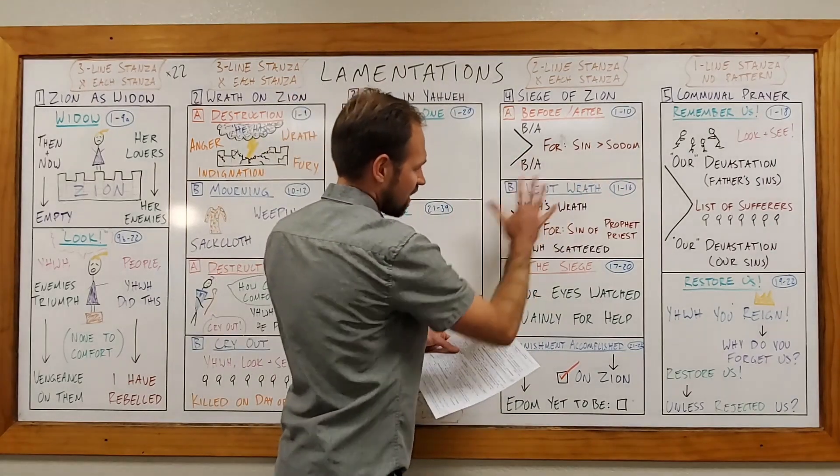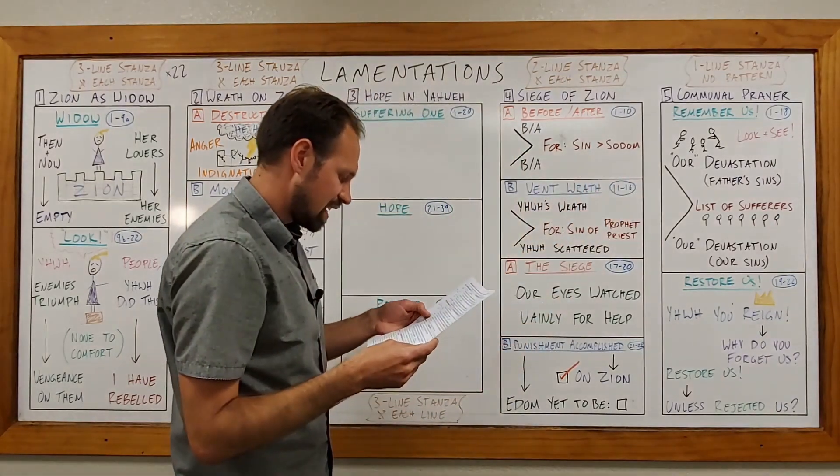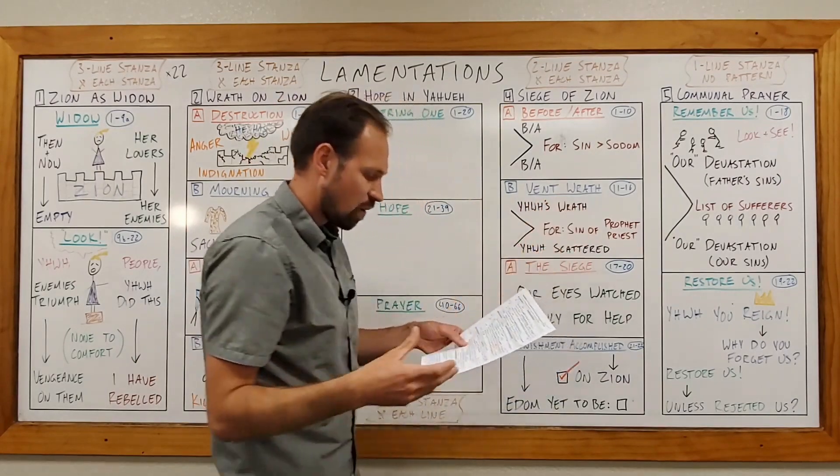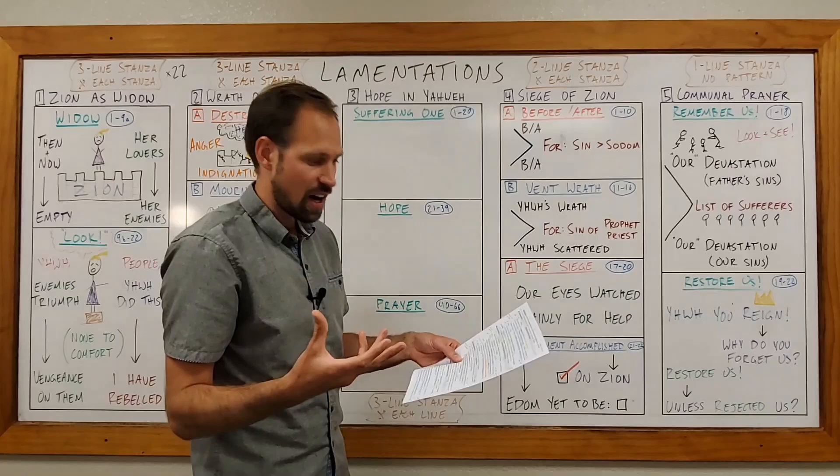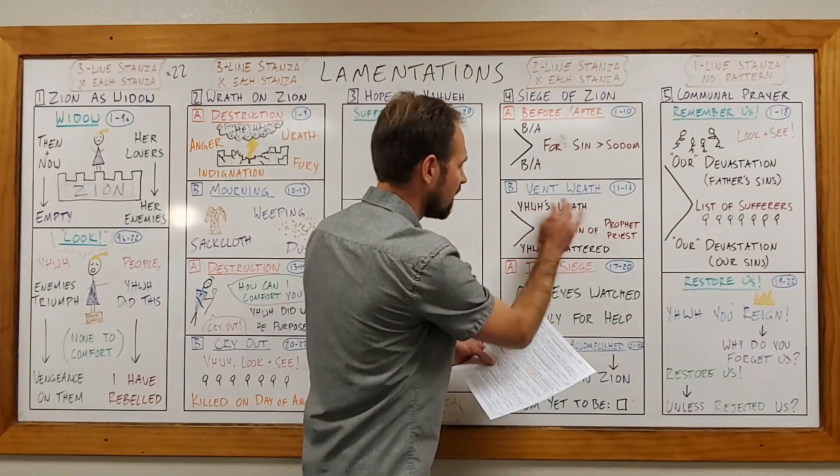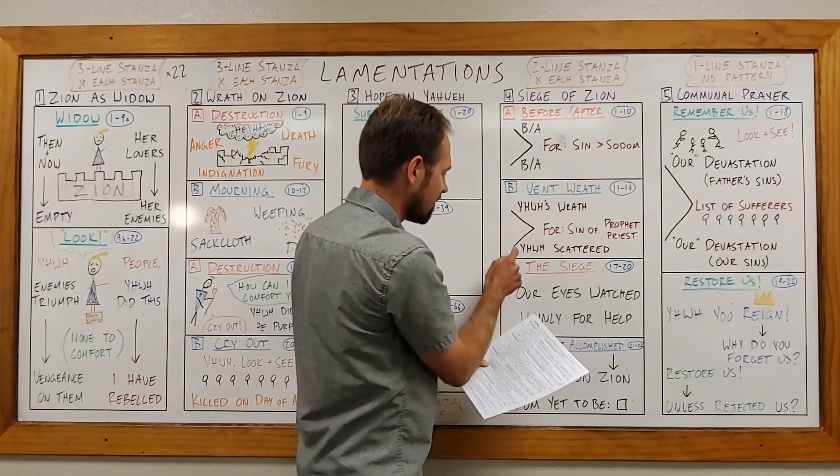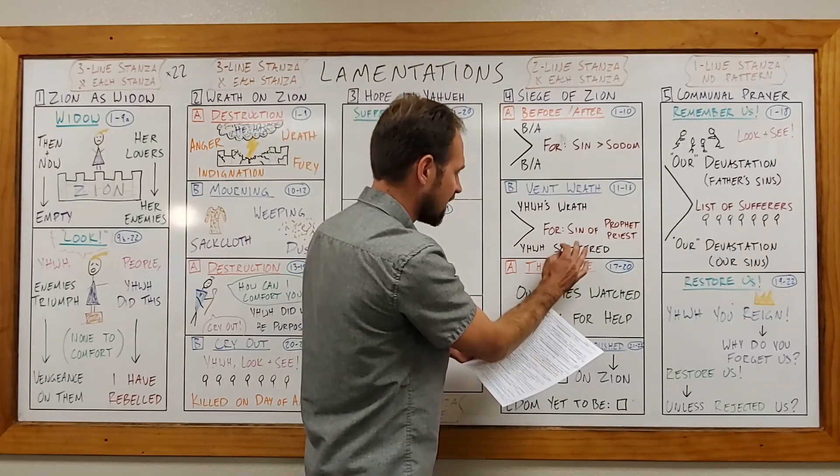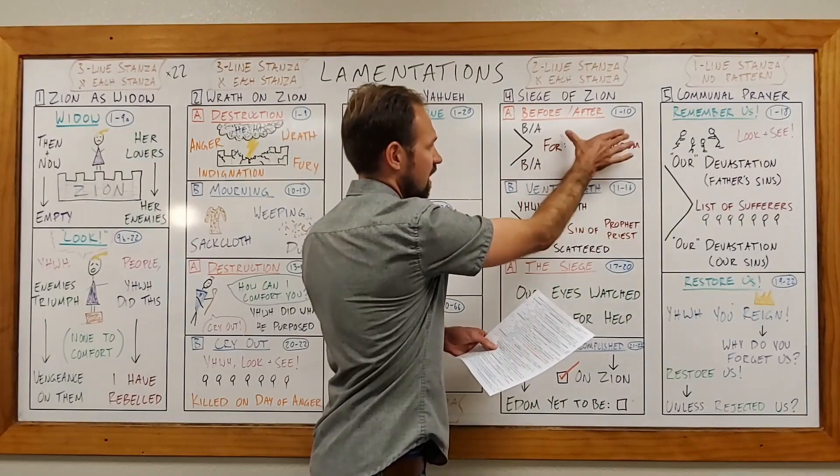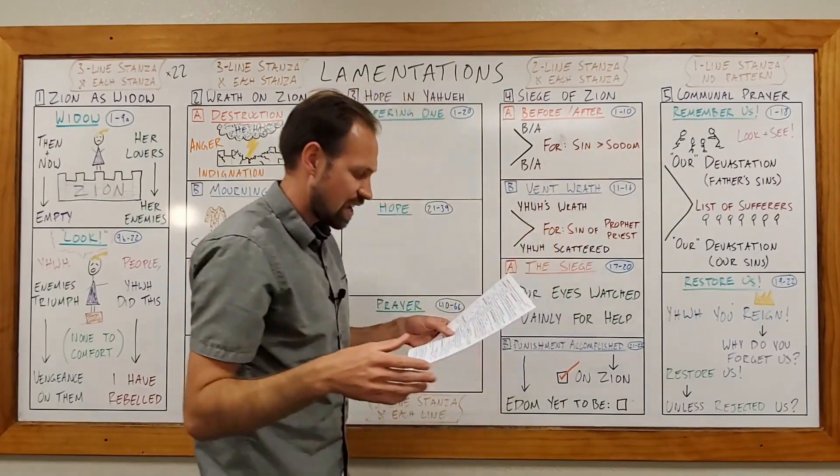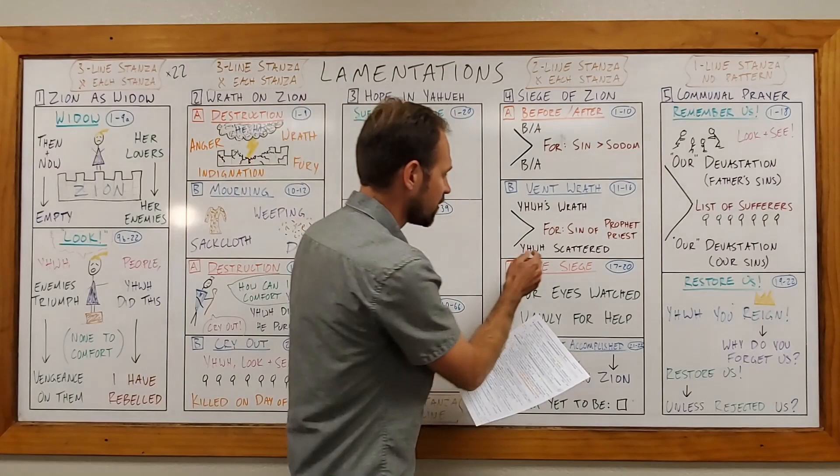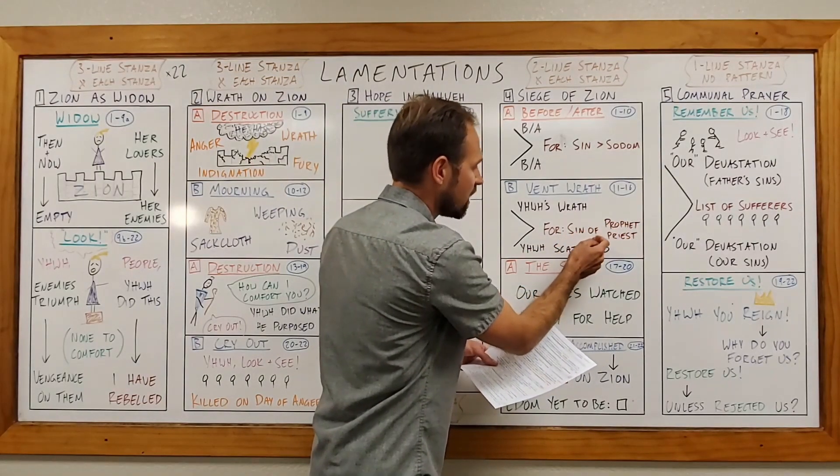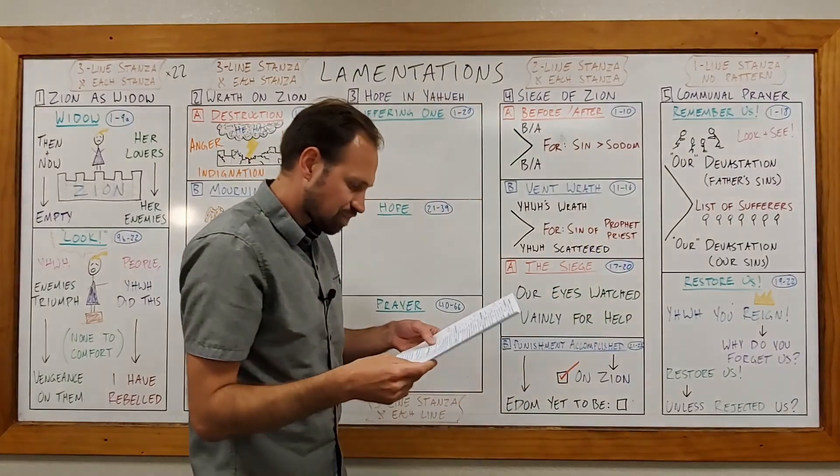Now in the second chiasm, in 11 to 16, the outside, the outer part of the chiasm is going to focus on the wrath of God. It's going to say that Yahweh gave full vent to his wrath in verse 11. And then in verse 16, it says that Yahweh himself scattered them. And then in the center, just like in 1 to 10, is a description of sin. This was for the sin of her prophets and for the iniquity of her priests.